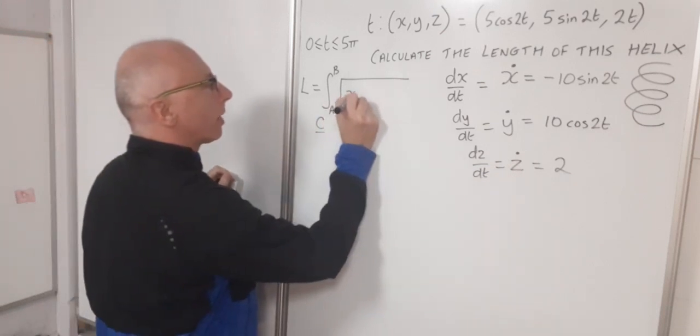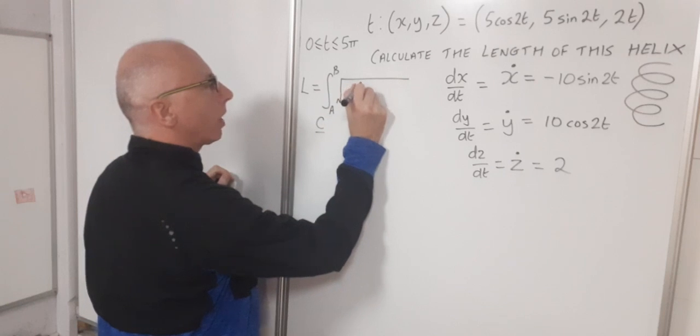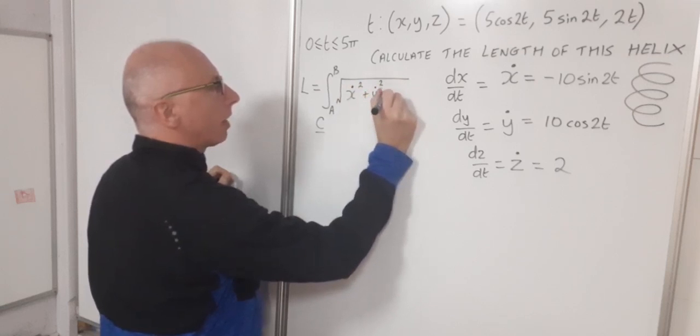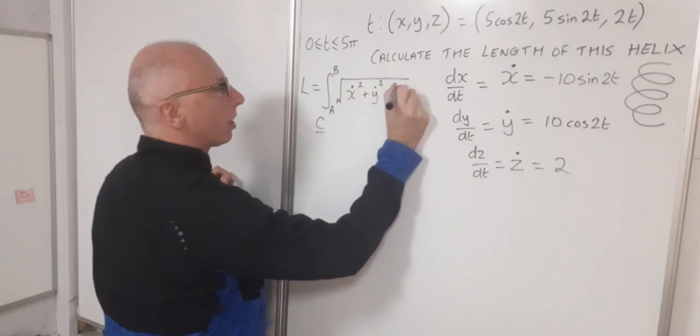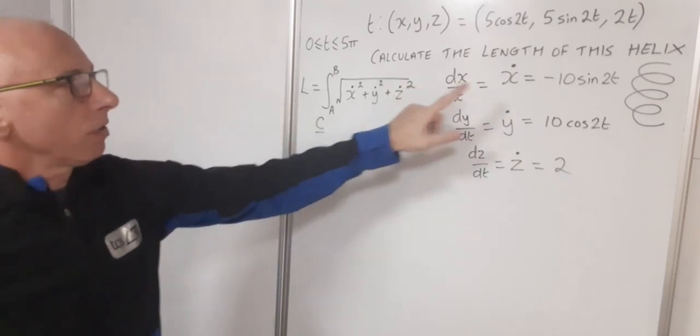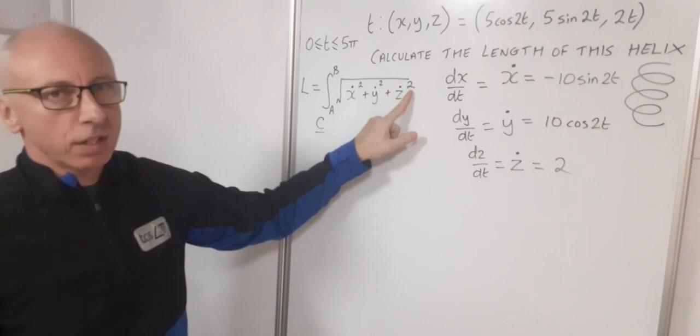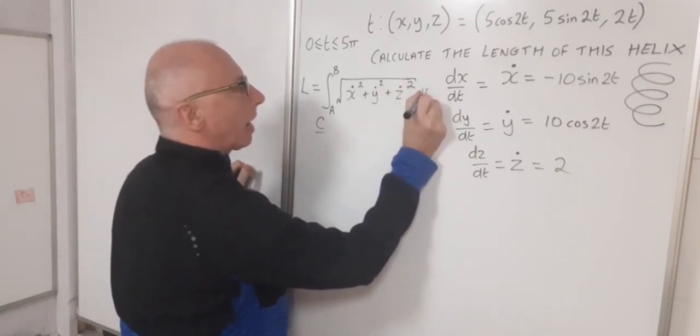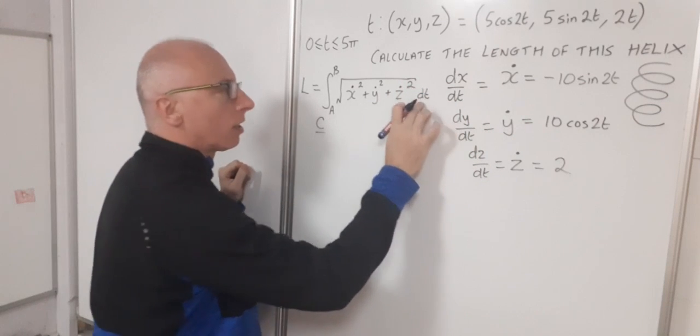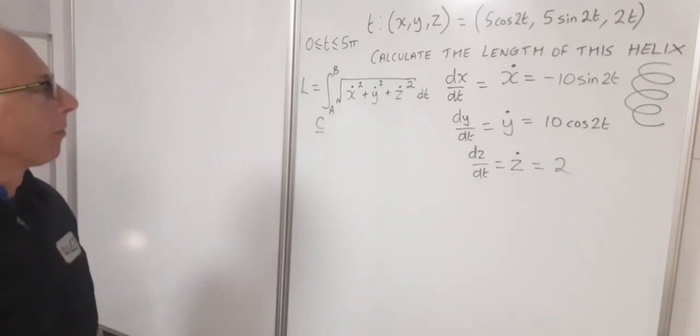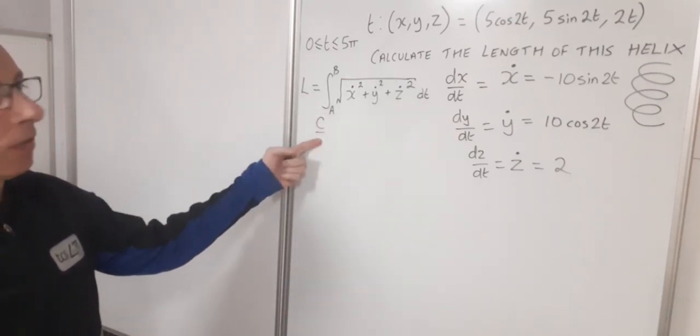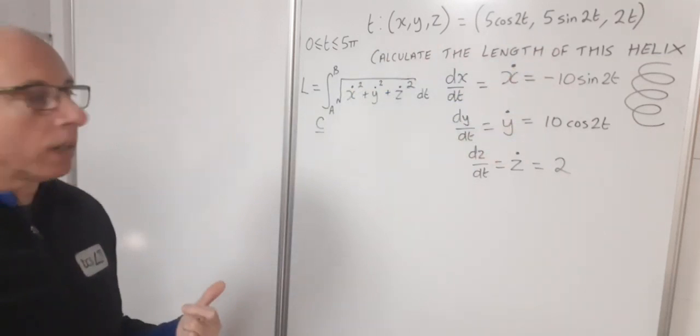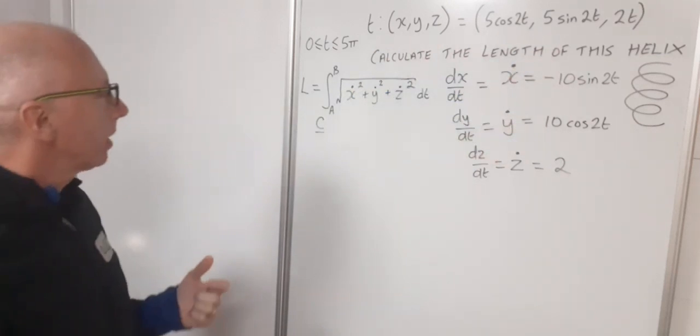So each derivative is squared. X dot is squared, add that with Y dot squared, and add that with Z dot squared. So that just means those derivatives squared, that's not the second derivative. And then integrate that. As these are all functions of T, it's all integrated with respect to T. So that's our curve C and that's our parameterization. So what we need to do now is just plug in the values and let's see if we can integrate it.